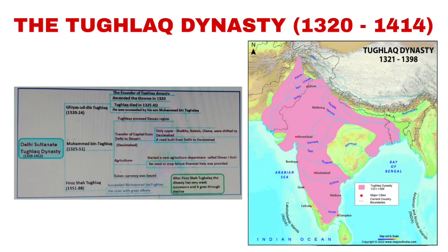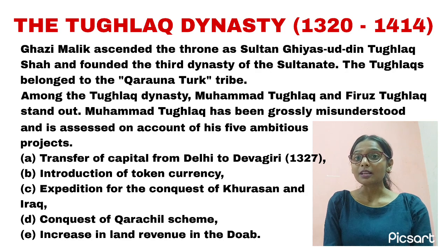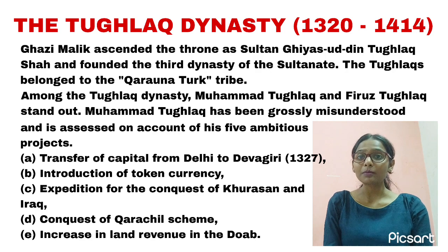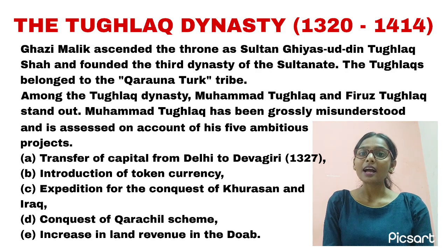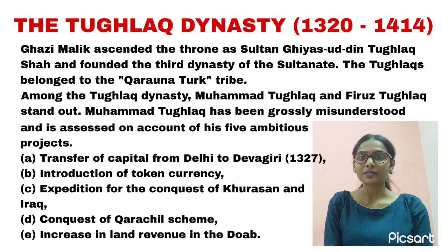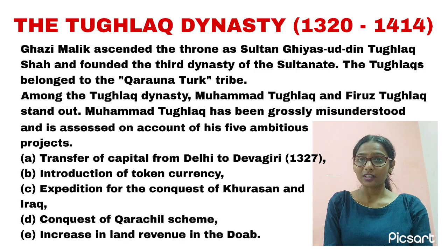The Tughlaqs came next. Ghiyasuddin Tughlaq was the first emperor of the Tughlaq dynasty, and he ruled over Delhi till 1325 AD. After him, his son Muhammad bin Tughlaq succeeded the throne. After his death in 1351, Firuz Shah Tughlaq became the next ruler. After his death, the Tughlaq dynasty became weak.